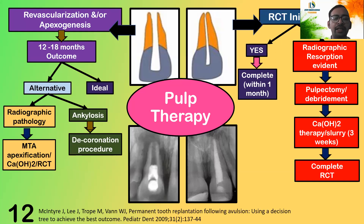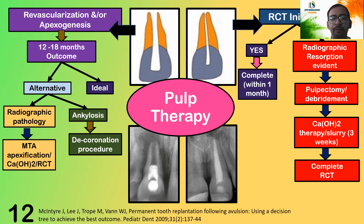If pulp therapy is to be initiated, there are two options based on whether the tooth has an open or closed apex. If the tooth has an open apex, then revascularization or apexogenesis is an option, with 12 to 18 months of follow-up to determine whether MTA apexification is required. If there is ankylosis, a decoronation procedure is required. If RCT is initiated, it should be completed within one month. If resorption is evident, calcium hydroxide is placed for three weeks followed by complete root canal treatment.